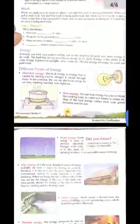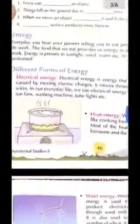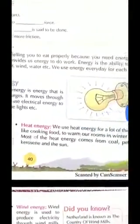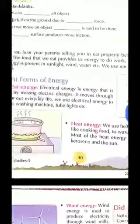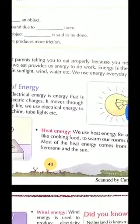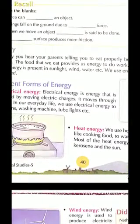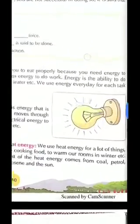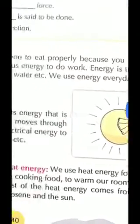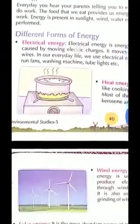So work humne kal kiya tha aur aaj hum karenge energy. So if you read this line: everyday you hear your parents telling you to eat properly because you need energy to do work. Aapke parents kehte hain proper food khao, taake aapko energy milay. Jisse food cho hai, humhe energy provide karta hai to do different work. Vaisi hi other sources bhi hain — sunlight, wind, water — they also provide us energy which we use to do different work. So actually, what is energy? Energy is the ability to do work. Energy kya deti hai — humhe saksham banati hai kisi kaam karne ke liye.